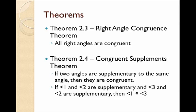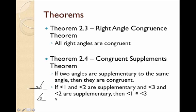Our next one is the Congruent Supplements Theorem. If two angles are supplementary to the same angle, then they are congruent. For example, angle 1 and angle 2 are on a straight line, so they are supplementary to each other. If angle 3 is also supplementary to angle 2, then from our theorem, angle 1 is congruent to angle 3. So if angle 1 and angle 3 are both supplementary to angle 2, then angle 1 is congruent to angle 3 — and we don't have to do any math to show it.